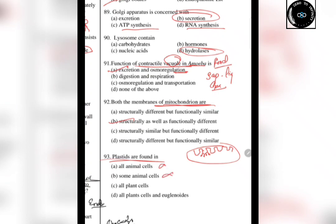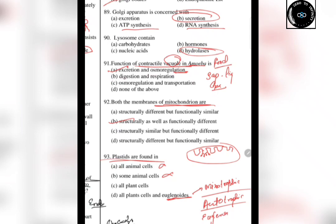The next question is: where are plastids found? They are not found in animal cells. Plastids are found in plant cells as well as in Euglena. Euglena shows mixotrophic nutrition — both autotrophic and heterotrophic. It has a special pellicle membrane and contains chlorophyll A similar to higher plants. So plastids are present in plant cells as well as in euglenoids.